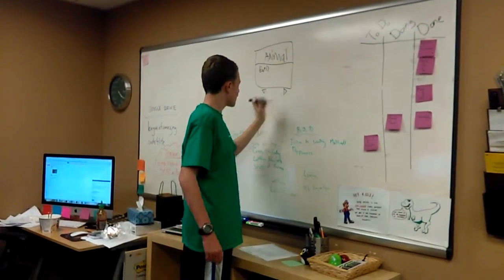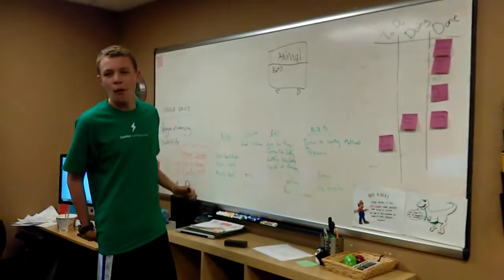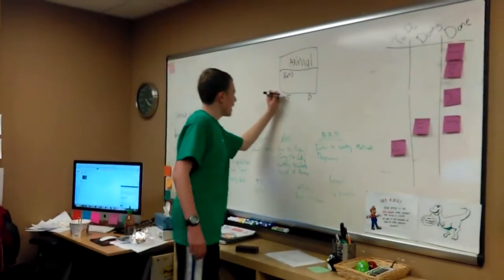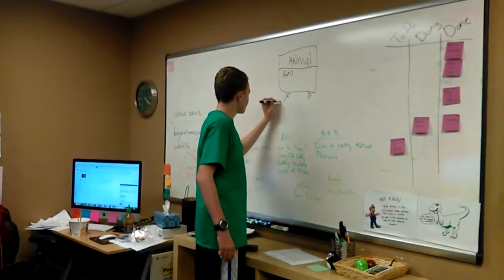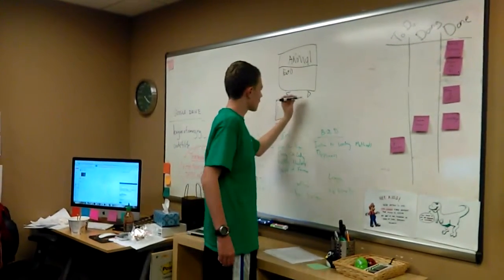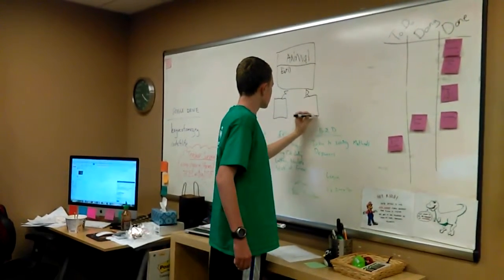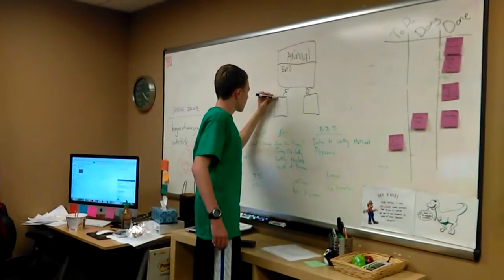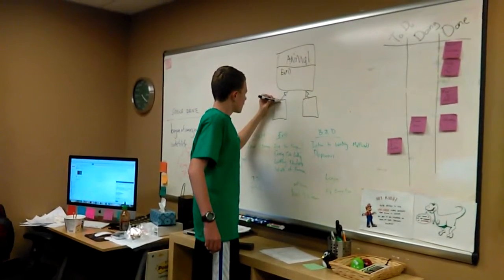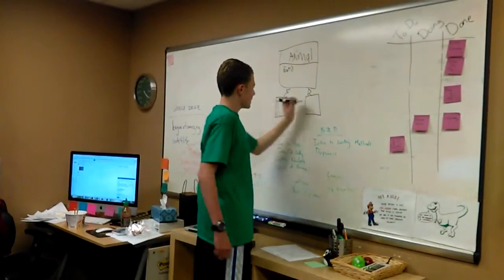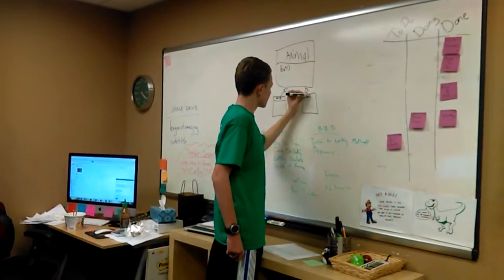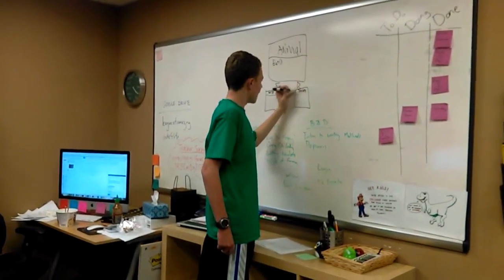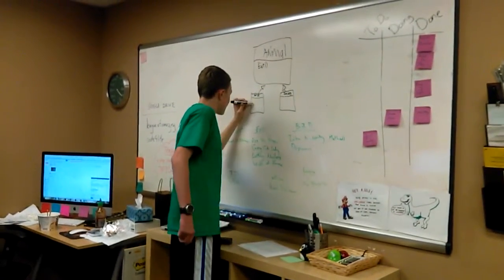classes named Horse and Donkey that inherited from Animal like this, and they both overrode the eat method.